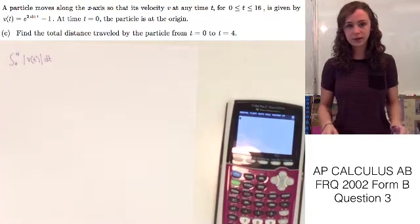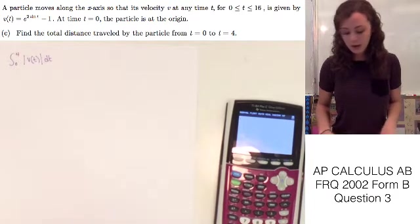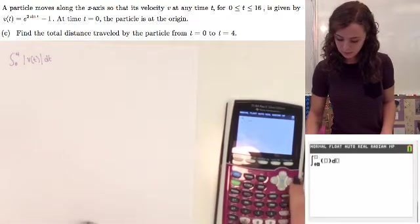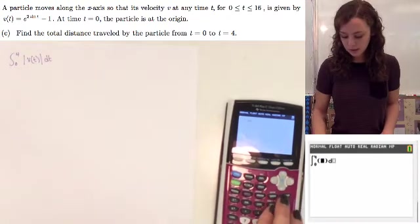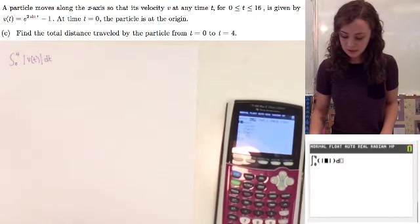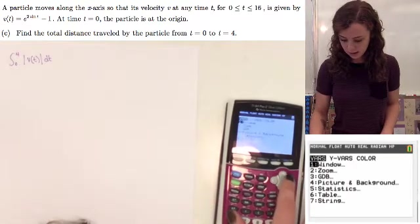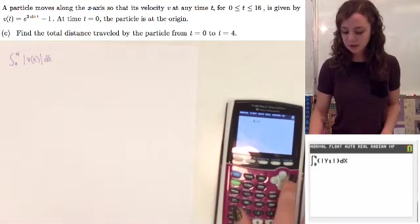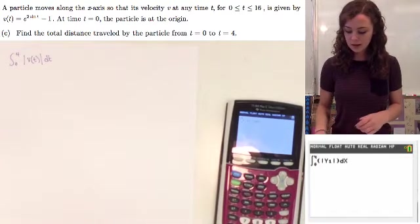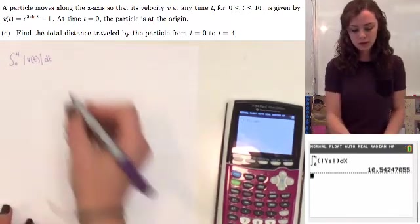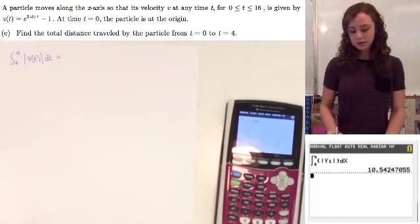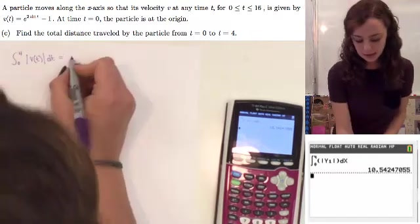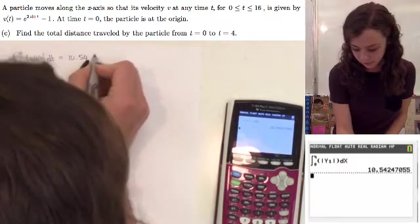And we can easily just put this into our calculator, and it's really easy since we already have y1 as v(t). So we'll do math 9, and we'll put the absolute value in here, which is under press math, and then go to number, and it's the first one. And we'll put in y1, since we already have it entered into our calculator, and that will give us the value. Once it finally loads, it will give us the total distance traveled. So you just need to make sure you take the absolute value of the velocity function in order to find the total distance.